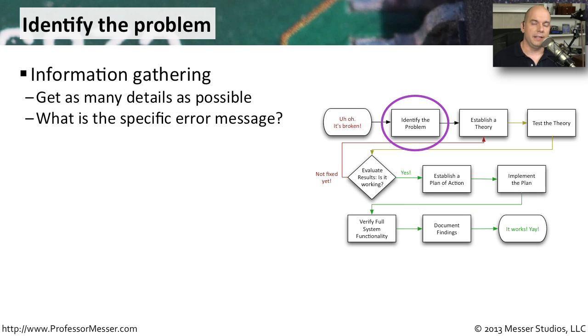The first step of identifying the problem is often the most critical. This is where you are gathering as much information as possible about what this problem really is, and this is where we're going to be asking a lot of questions. If somebody says the network isn't working, you need to find out why they believe that's the case. Why do you think the network isn't working? Are you seeing an error message? What does that error message say? That way, you can gather as much details that you can then use later on.